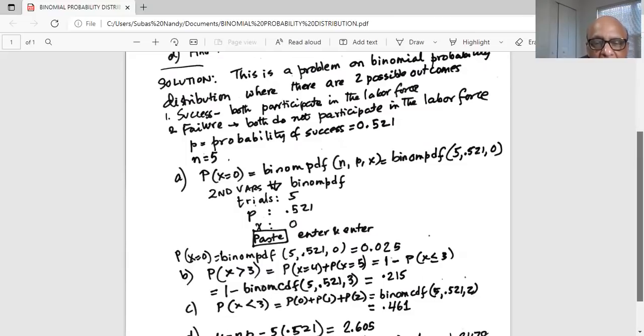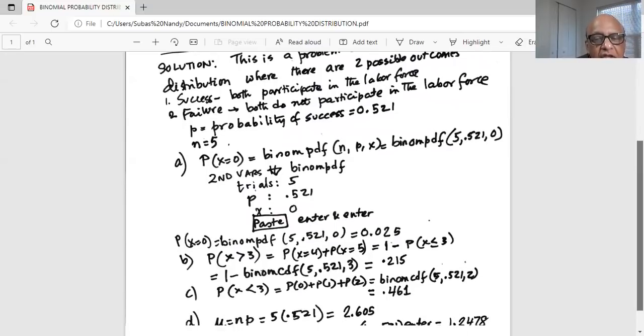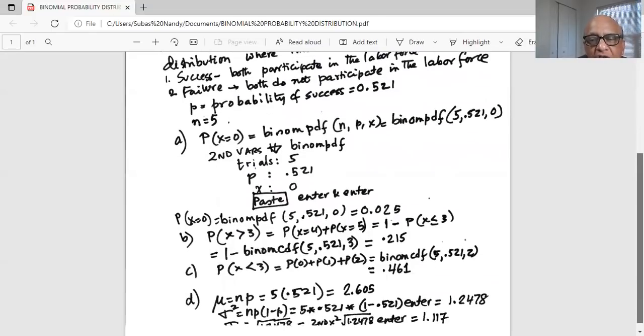Trials is five, p is 0.521, and x, we want zero, one, two. Last number is two. So x is two in this case. Why? Up to two, because we are interested in probability x less than three, and that is 0.461.